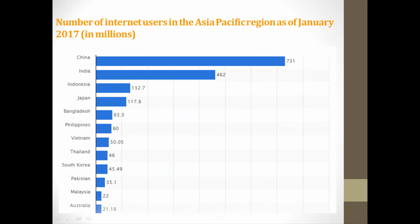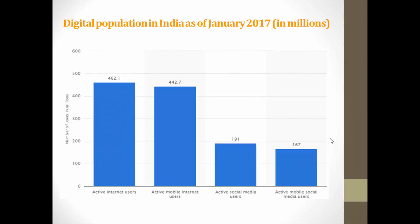Internet plays a major role in IoT because without internet there is no IoT. On the screen we can clearly see that India is in second position in the world, having 462 million internet users. Out of those 462 million, active internet users on mobiles is 442 million, who are very actively using the internet in India.